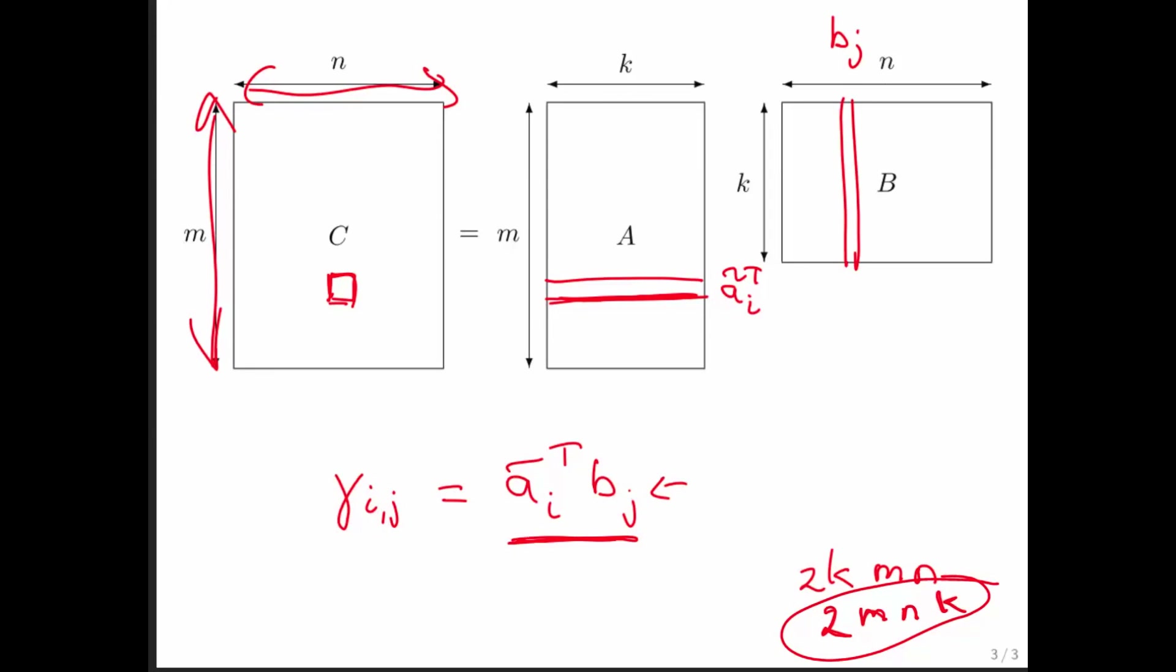So that's the cost of a matrix-matrix multiplication. Later, we're going to talk about how many memory operations are required. That's better done in the setting of discussing high-performance matrix multiplication, which is an enrichment at the end of next week.